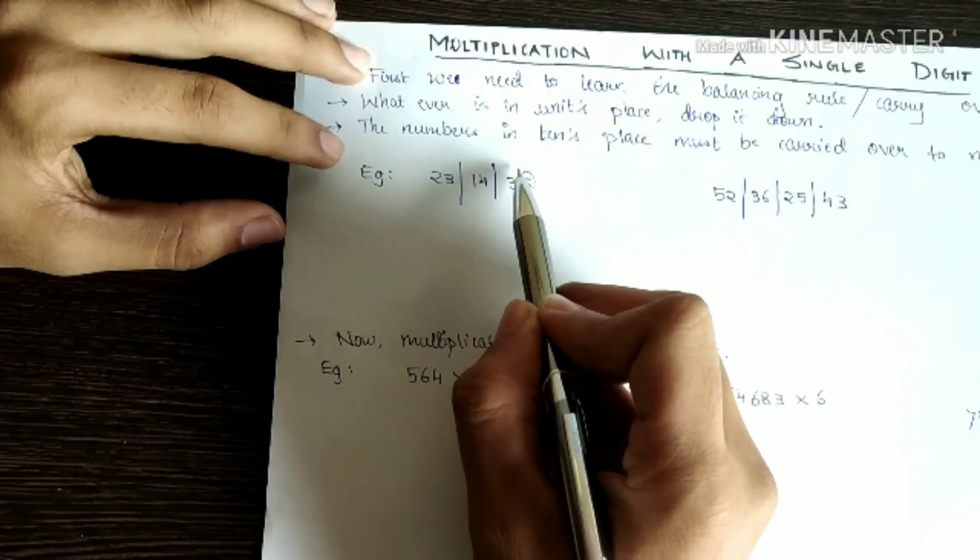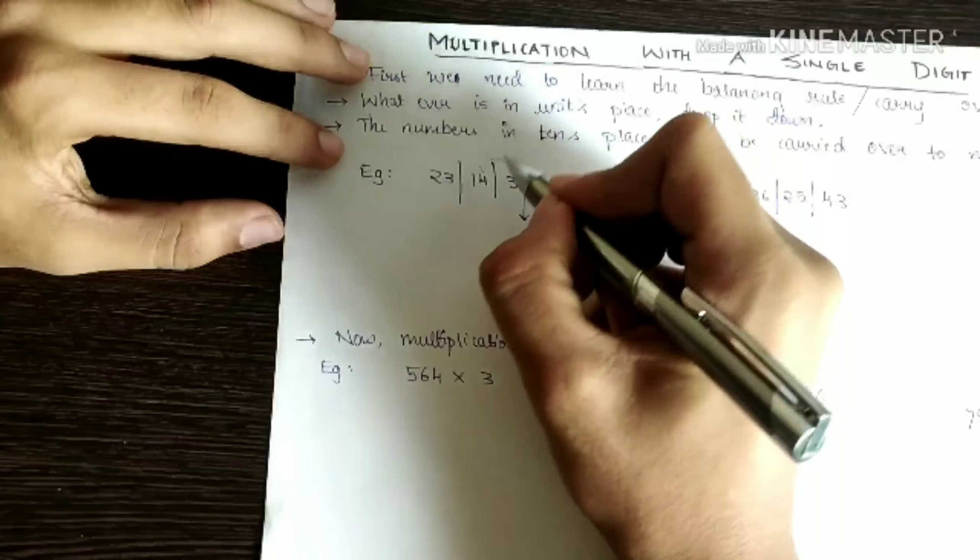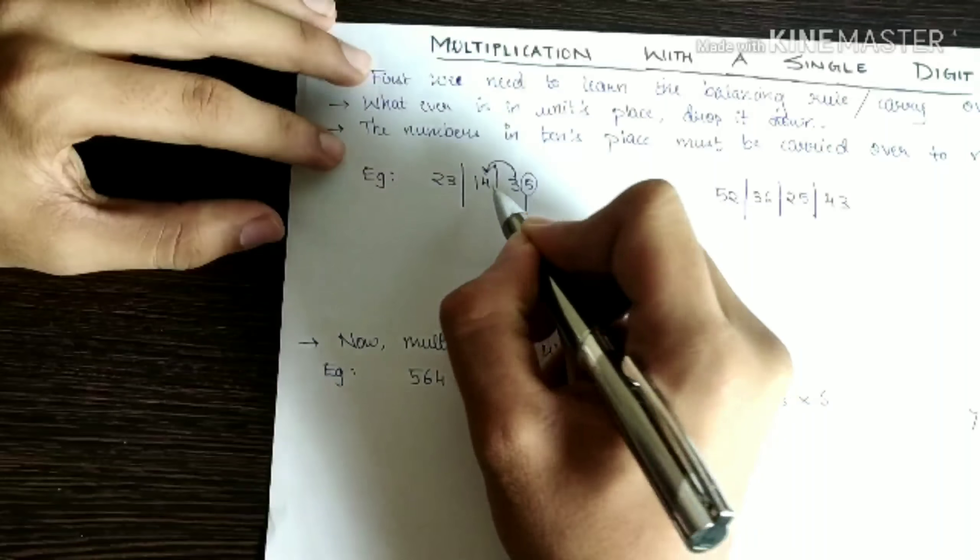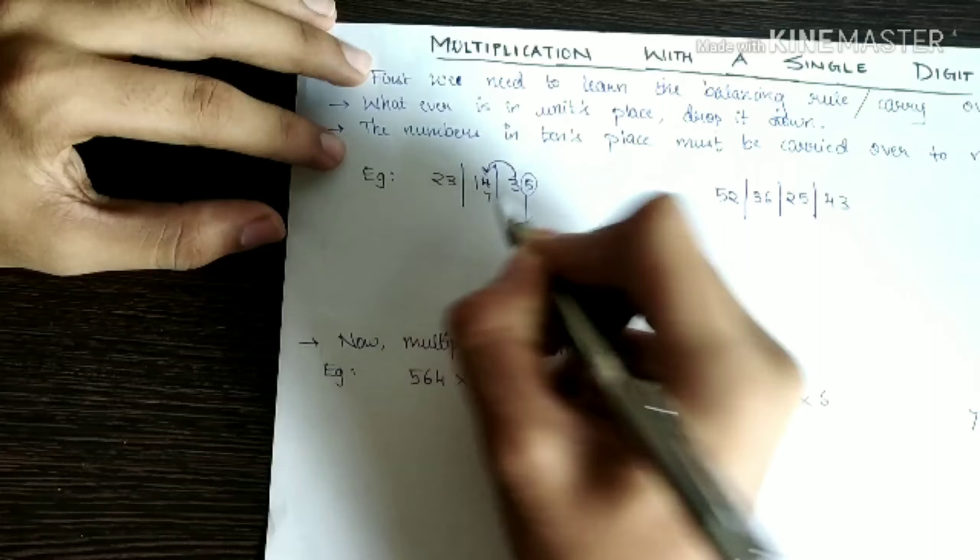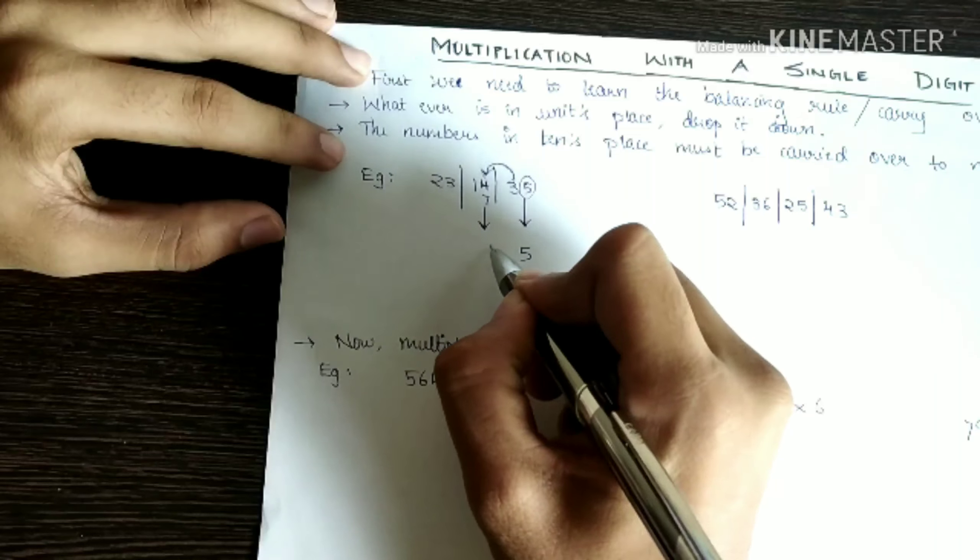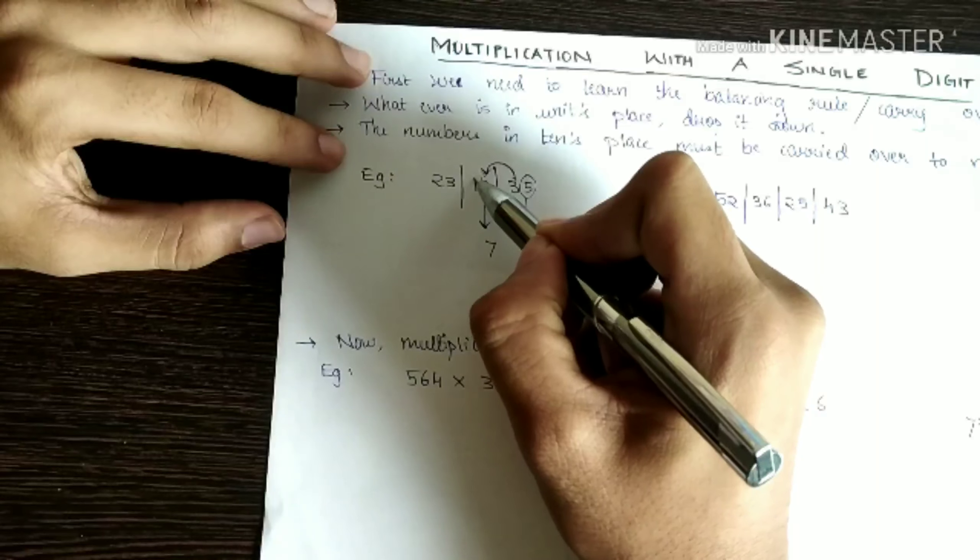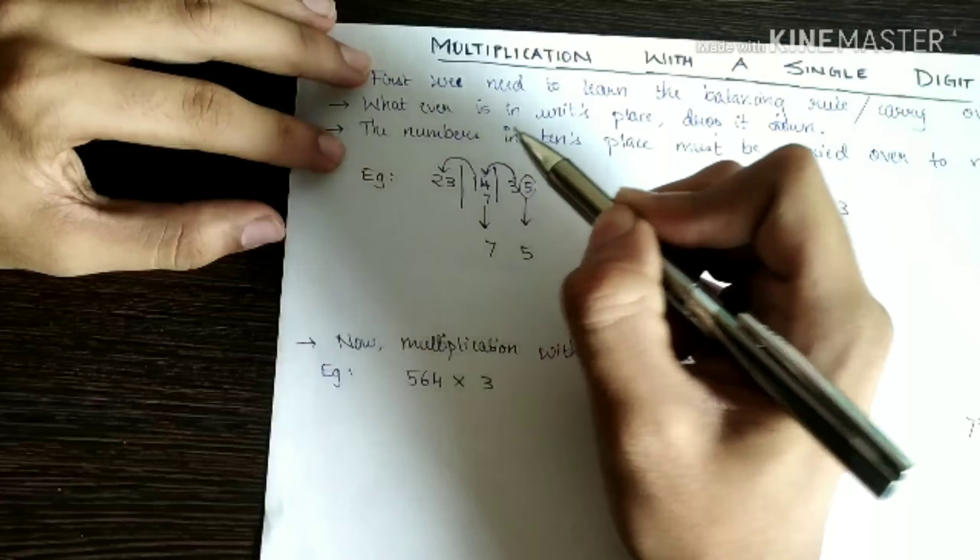Whatever is in tens place carry over to the next one. So we have to add to this. Three plus four will be seven. Now this becomes seven and seven is in units place. We have to drop it down. So next comes seven. Now one. One is in tens place.